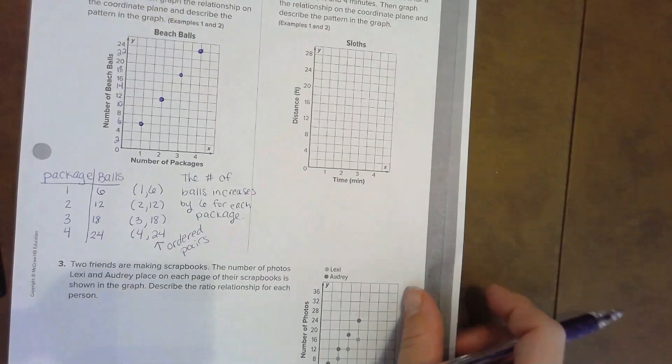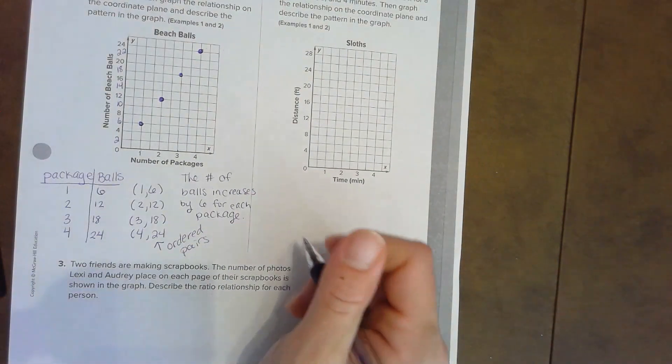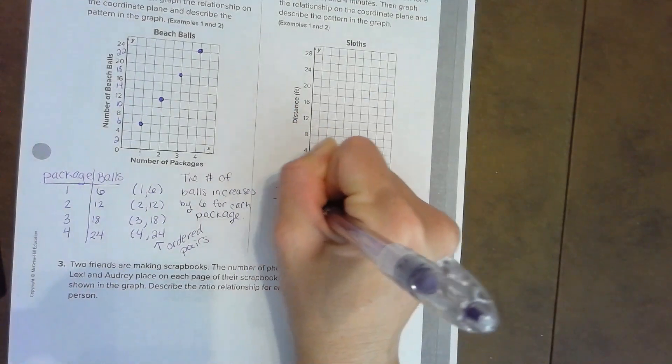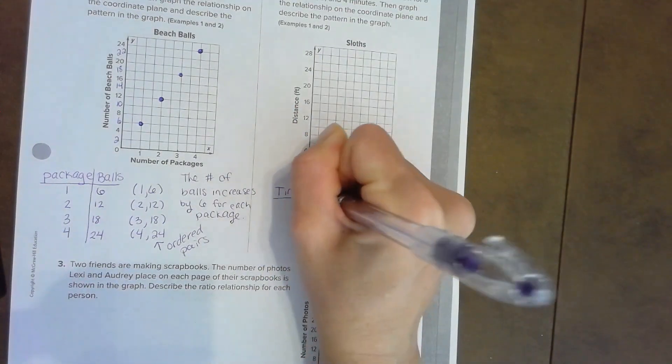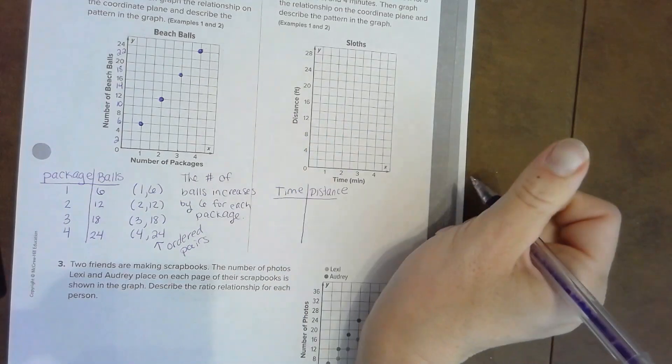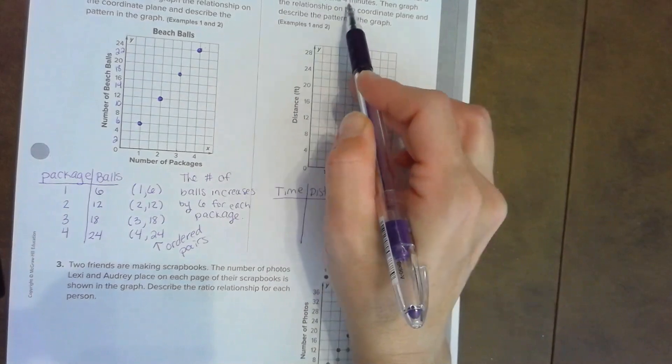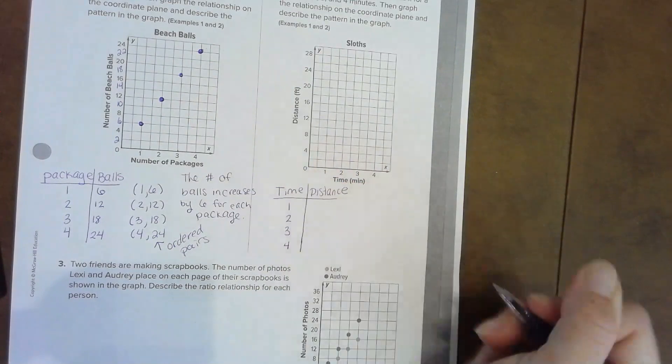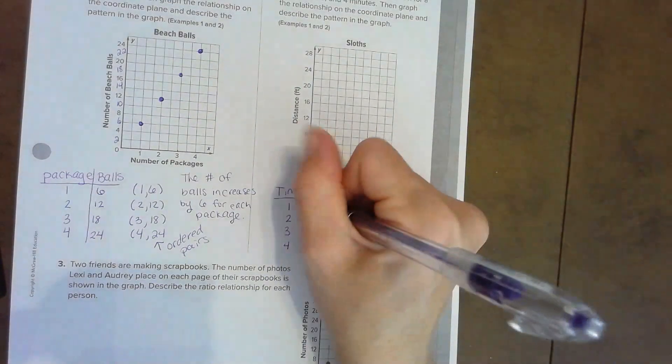Since you're getting the hang of this, I'm going to go a little bit quicker. Let's make our table: time and distance. It tells me up here count from one to four: one, two, three, four. The distance traveled is seven feet for every one minute.